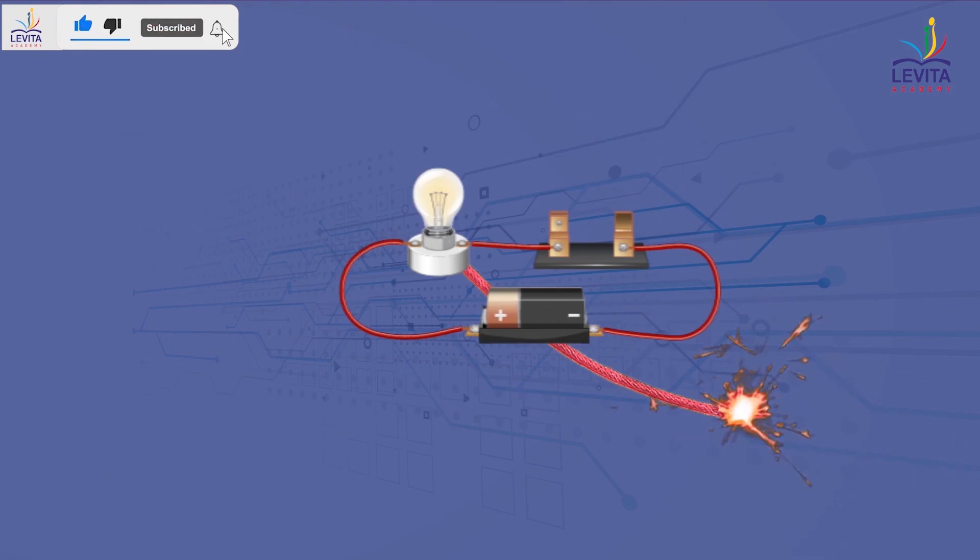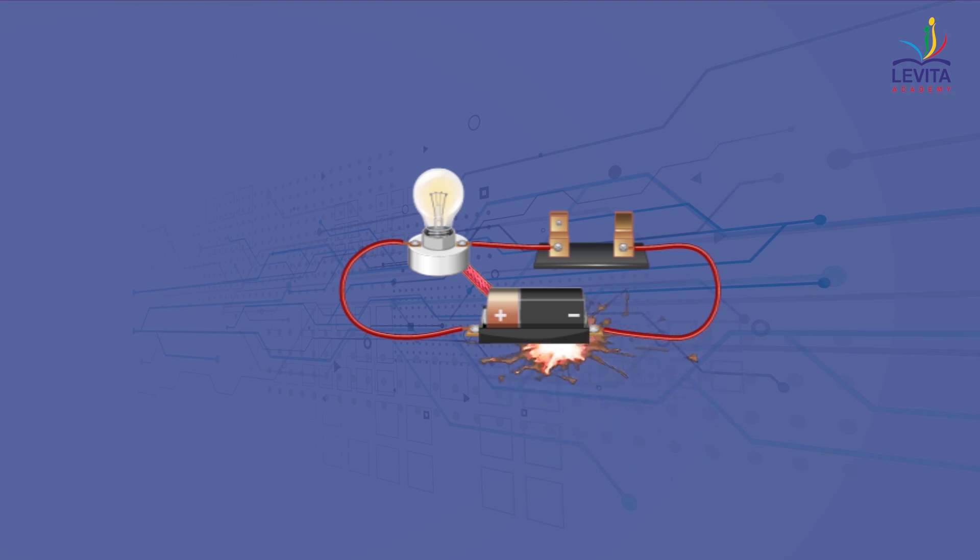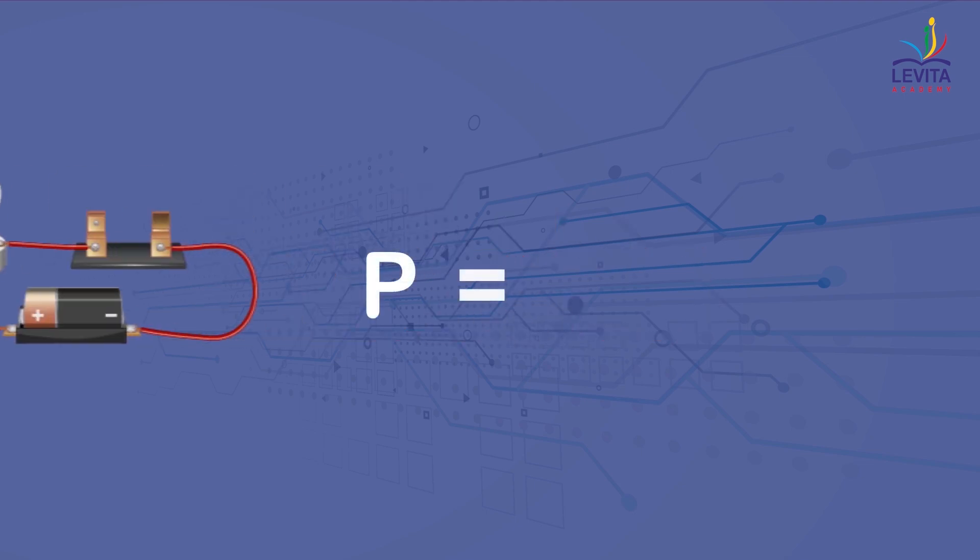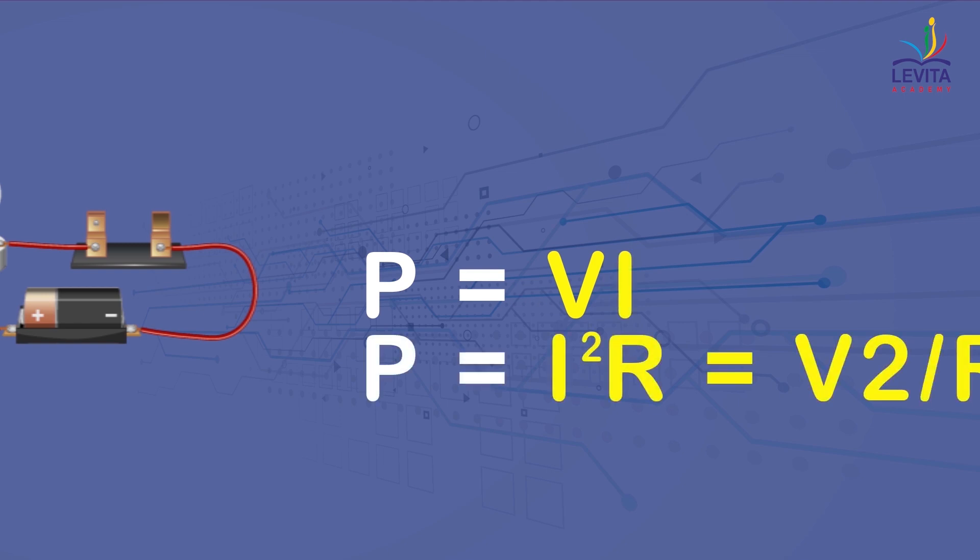From the electricity point of view, we have learned that electric power is the rate at which electric energy is dissipated or consumed in an electric circuit and is expressed as P = VI or P = I²R that is equal to V²/R.